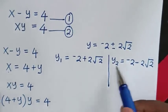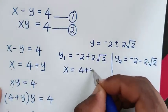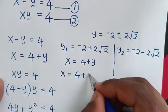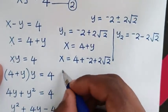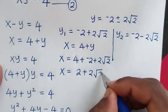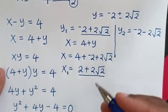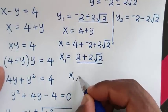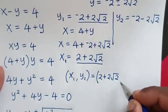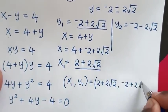Now that we have the two values of y, we find x using x is equal to 4 plus y. For the first solution, substituting y1 which is negative 2 plus 2 square root of 2: x is equal to 4 plus negative 2 plus 2 square root of 2, which gives x1 is equal to 2 plus 2 square root of 2. So the first solution is x1 comma y1 equals 2 plus 2 square root of 2 comma negative 2 plus 2 square root of 2.